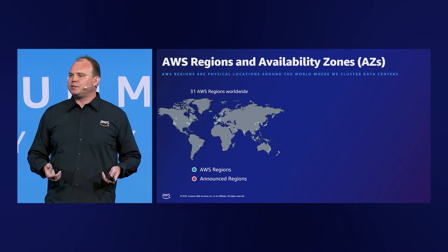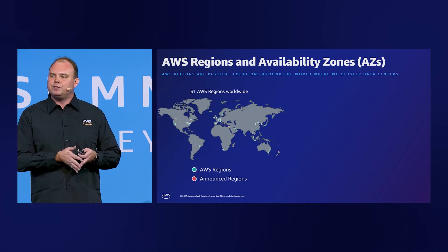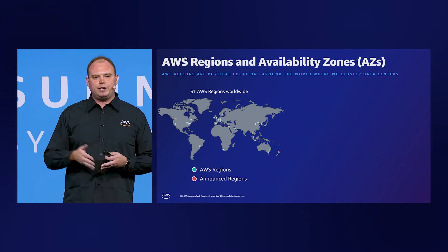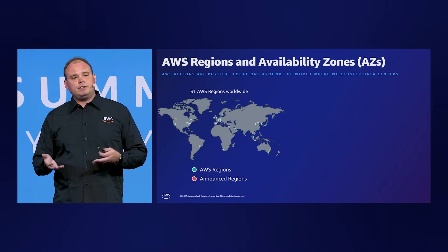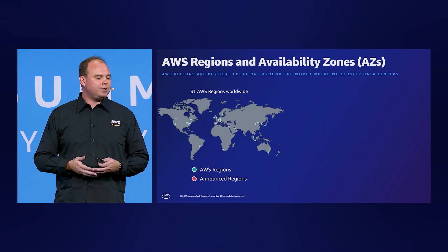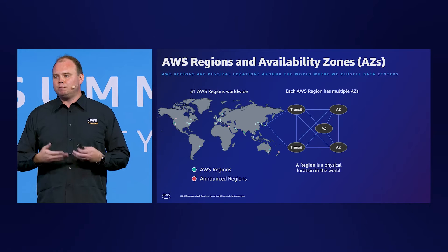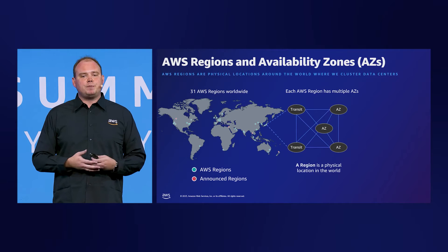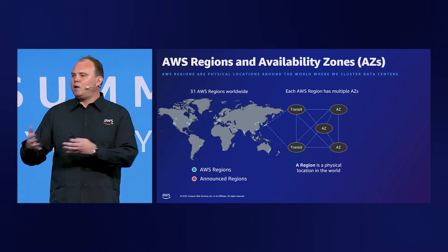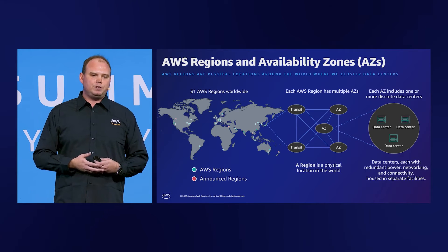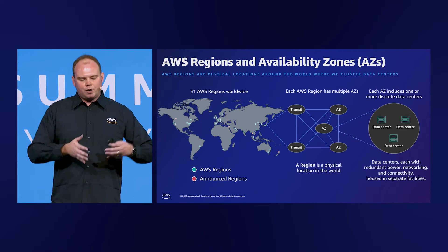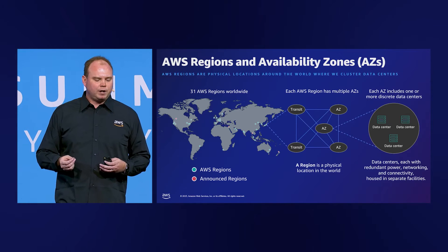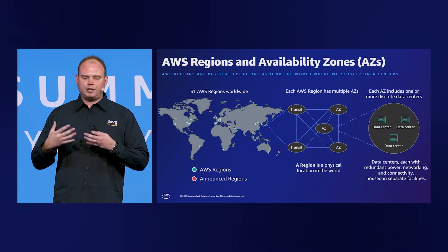How do you do that on AWS? AWS has 31 regions all over the world — including here in Australia, Canada, Israel, New Zealand, and the United States — totaling about 99 availability zones. An availability zone has at least three per region, and they're made up of data centers separated by a meaningful distance so there's no shared fate, like a flood, but they're close enough together to be thought of as a logical data center.